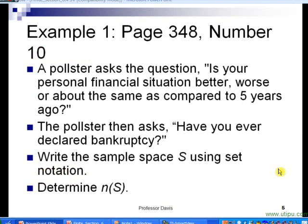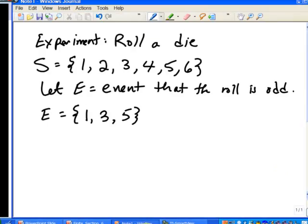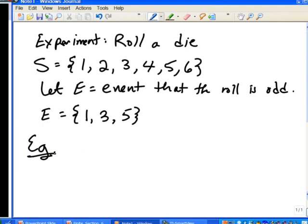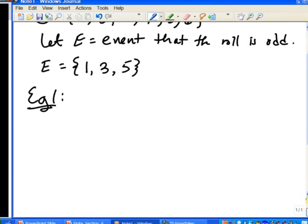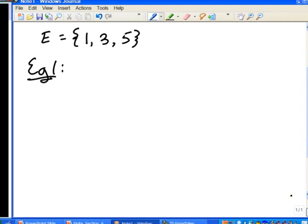Let's start to take a look at an example here in slide number 5. A pollster asked the following question: Is your personal financial situation better, worse, or about the same as compared to five years ago? And then the pollster asked, have you ever declared bankruptcy? Let's write the sample space S using set notation and then determine the size of the sample space. So, the notes here for example 1, the outcomes are fairly limited. So, here's a case where we could use a tree diagram to help us write out the sample space.